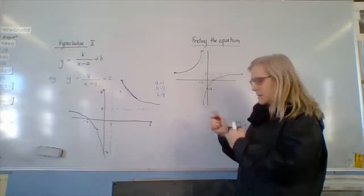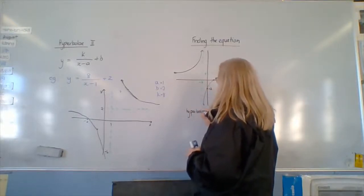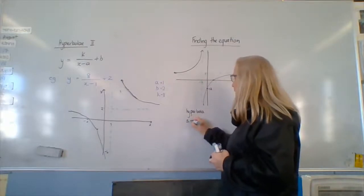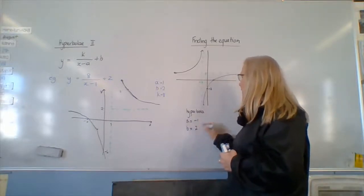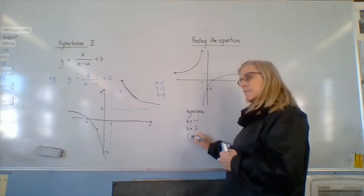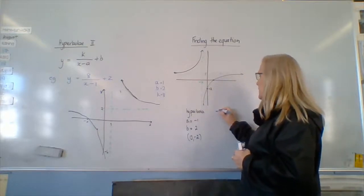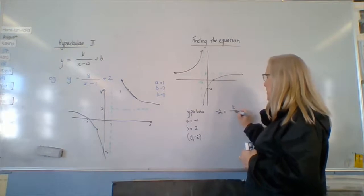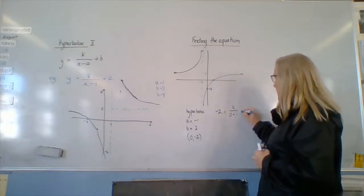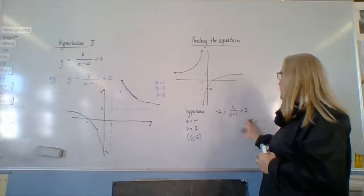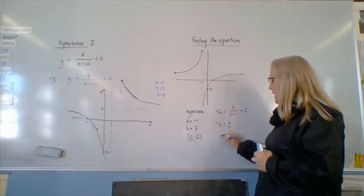So it's a hyperbola, and a equals — we do know what a is — a equals negative 1. And b equals 2. And we've got the point (0, negative 2). So we put what we know into it. Negative 2 equals k over (0 minus negative 1) plus 2. So negative 4 equals k over 1. Therefore k equals negative 4.